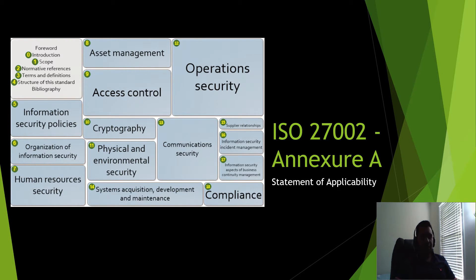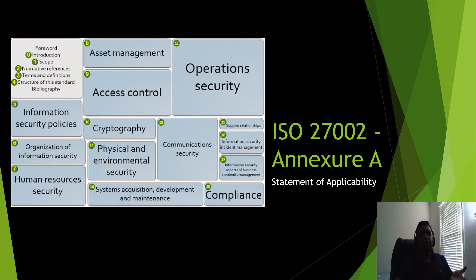Section 13 is communication security. It covers network controls including your network diagram, firewalls, IDS/IPS, and if you've outsourced services, reviewing NDAs and agreements. It also covers electronic messaging — not just email, but Slack, Skype, and other communication tools — ensuring they're secure, especially when transferring confidential information.